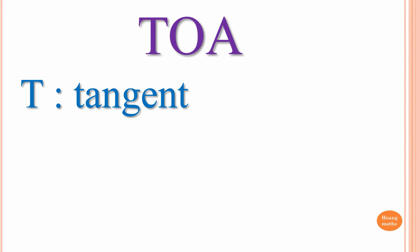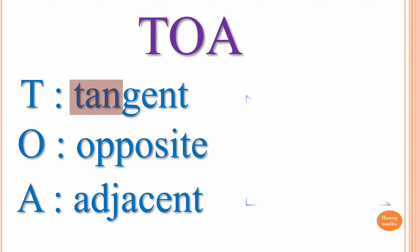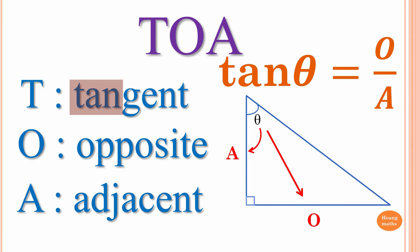T is for Tangent. When we write, we only write 'tan'. O is Opposite and A is Adjacent. With this triangle, angle theta is given. Next to the angle is A — we label it adjacent. The side opposite the angle we label O. We have O and A, so from TOA we use tangent. tan(θ) = O/A.